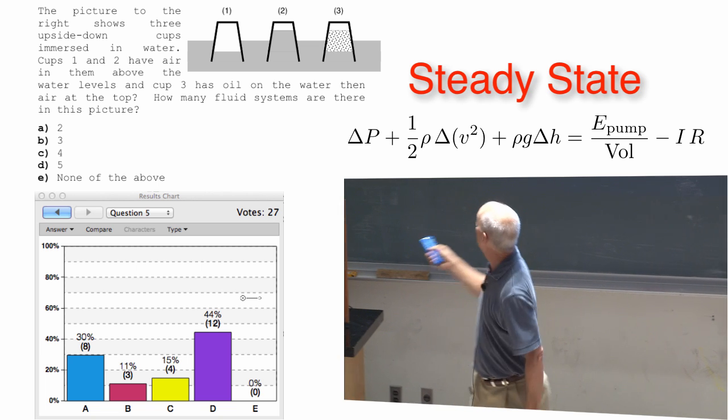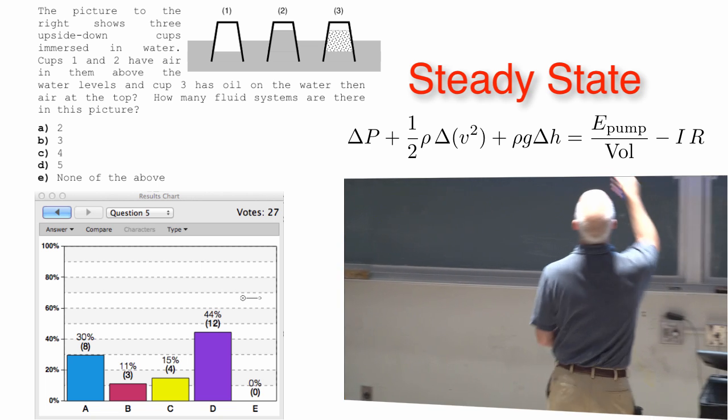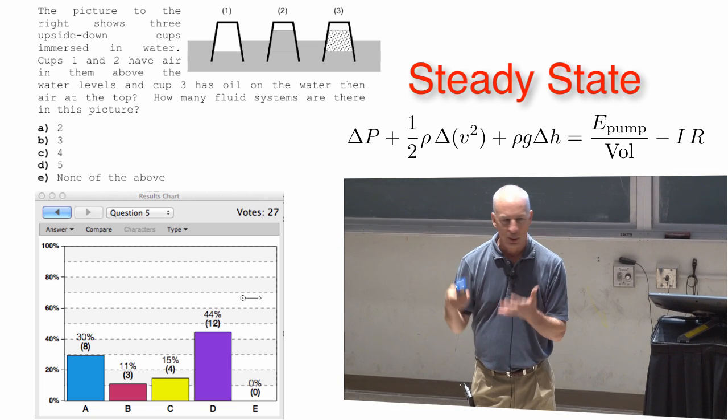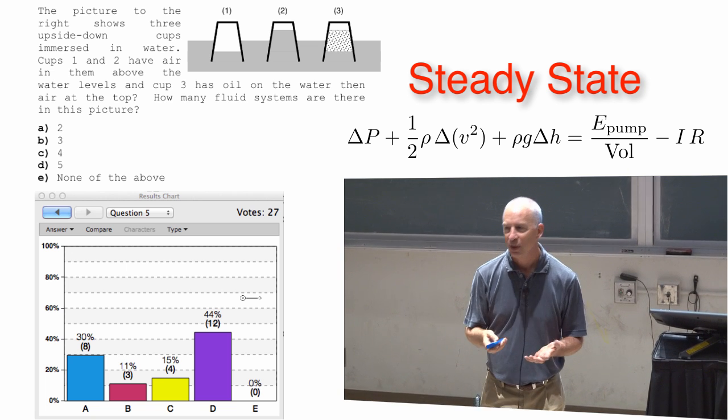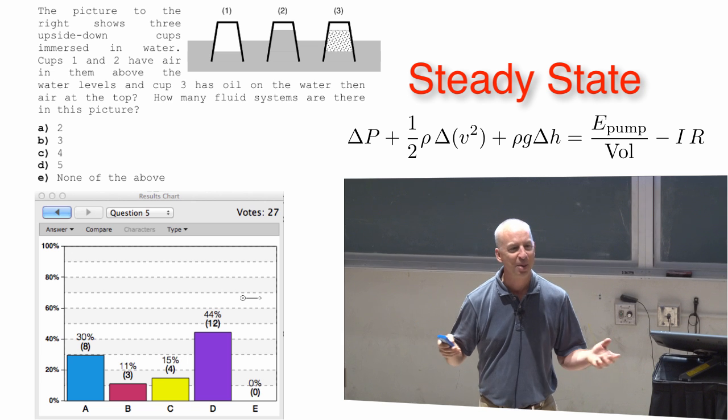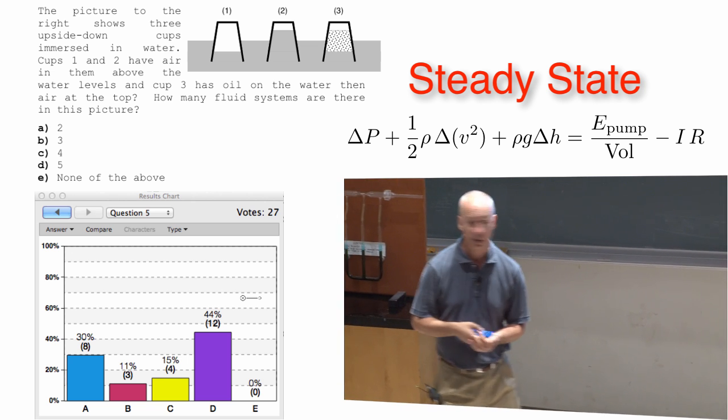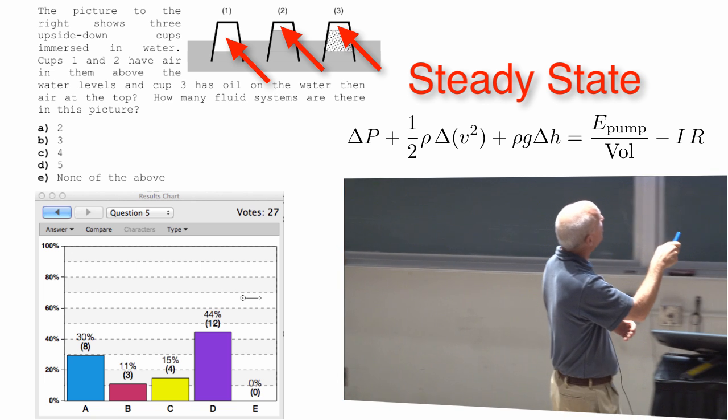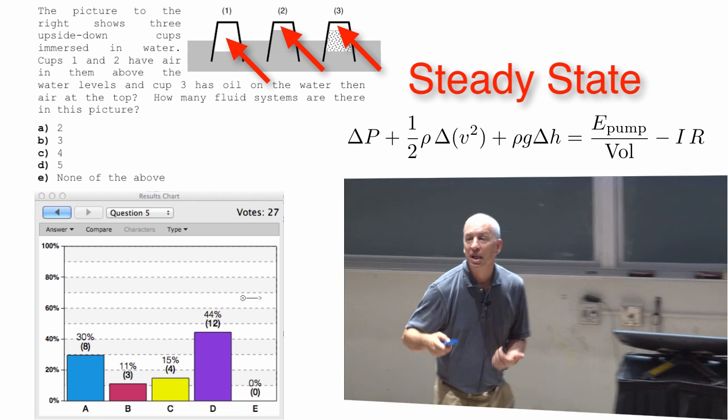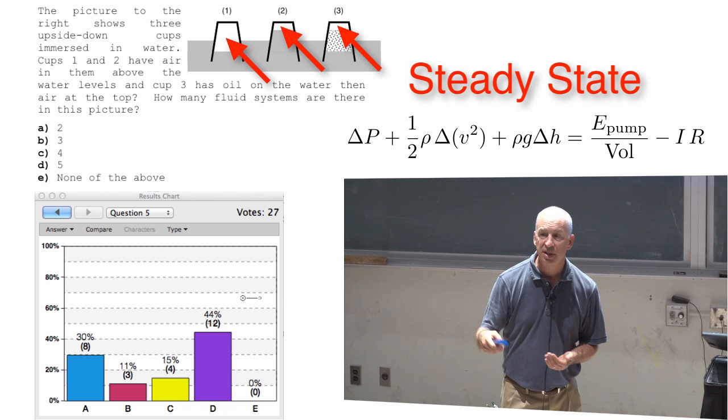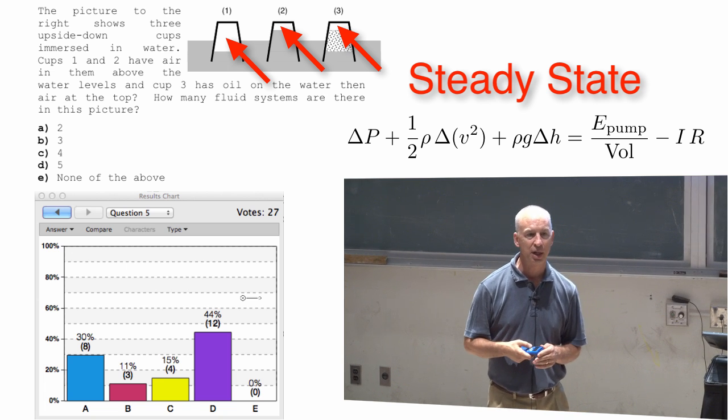Now, proving that with this equation is, of course, with this idea. Proving that with this idea is, of course, the point. Not just, oh, it feels like this ought to be a high pressure, and it feels like this ought to be low. You ought to be able to prove that it is. But those little air pockets are three separate fluid systems. They're unconnected from each other. They're all static, but they're not connected to each other.